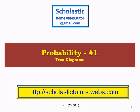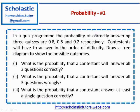Here we are going to look at probability tree diagrams. The question given here is as follows. In a quiz program, the probability of correctly answering three quizzes are 0.8, 0.5 and 0.2 respectively. Contestants will have to answer in the order of difficulty. Draw a tree diagram to show the possible outcomes.